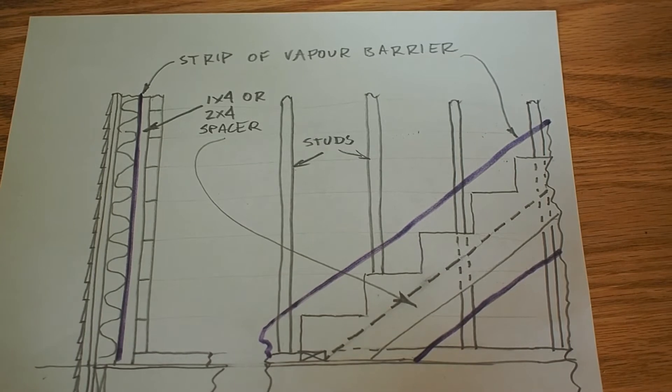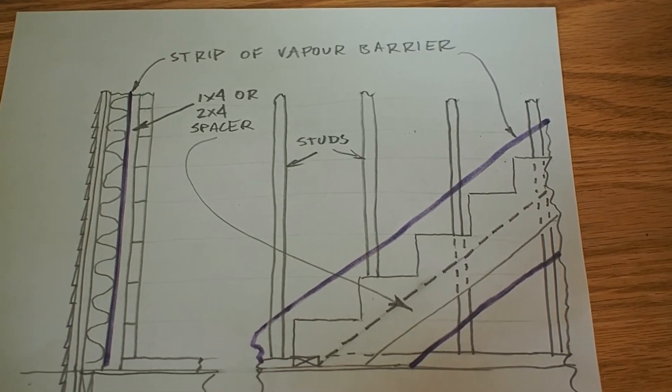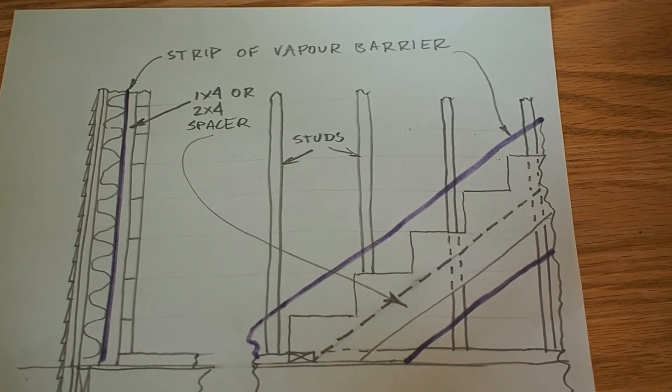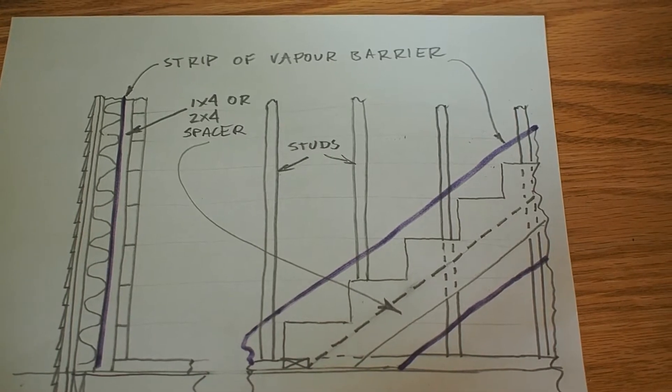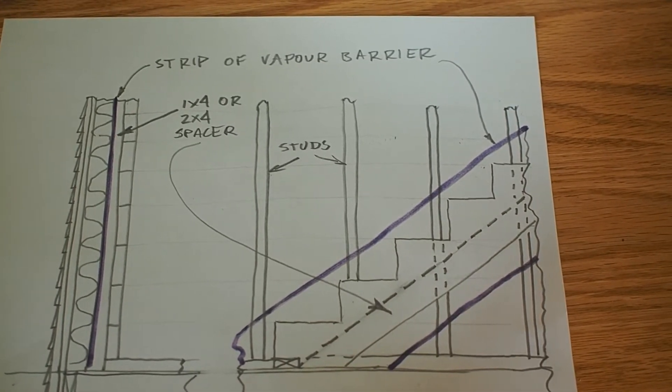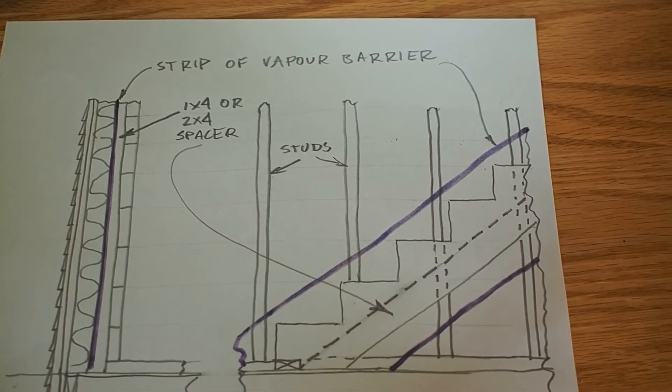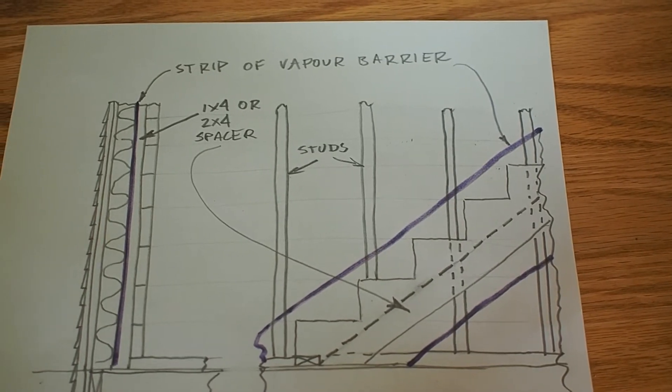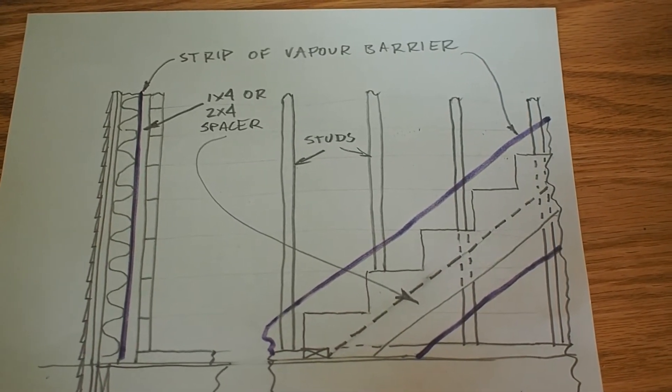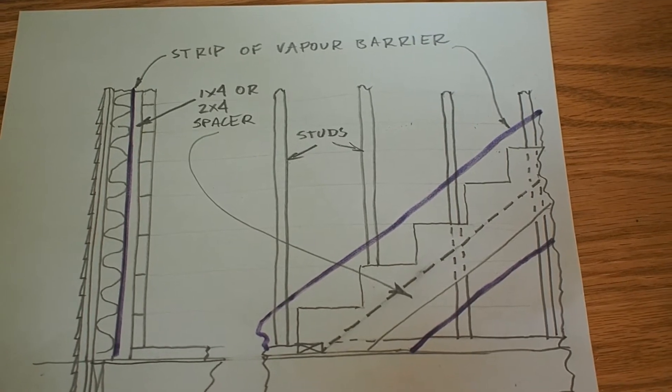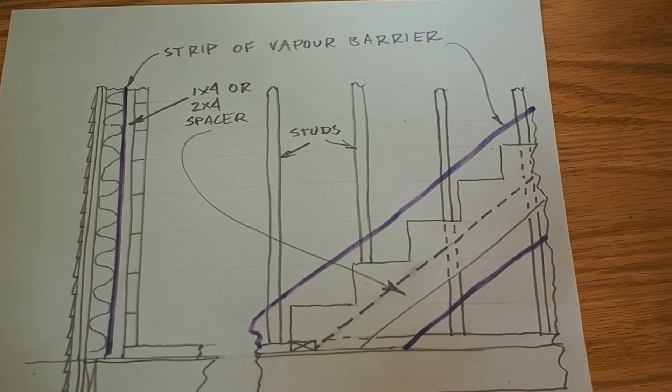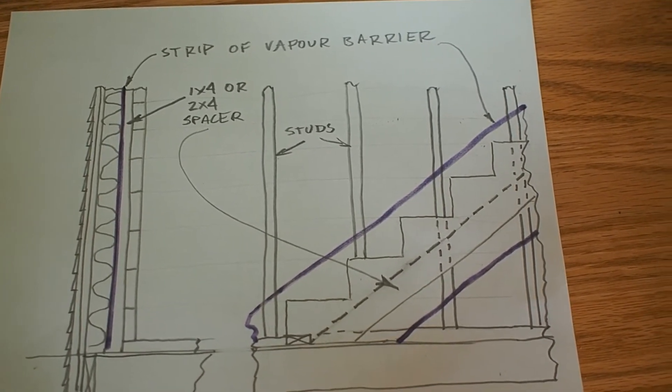The trick to installing the wall finish, any trim and the vapor barrier without having to do any cutting or sealing of those things is to plan for those things before you install the stringer. This drawing shows how this house was built so that the vapor barrier could be installed continuously and the drywall and the trim piece could be put in without cutting around the stair shape.